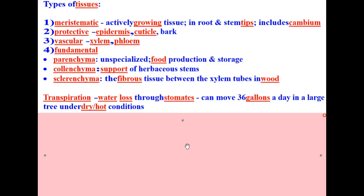Transpiration is impressive. It can move 36 gallons a day in a large tree under dry, hot conditions. Wait till you hear in a later video how much water is moved in an acre of corn. Very impressive.